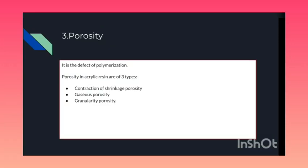Number three is porosity — a defect of polymerization that results in a porous structure of the cured acrylic. It may have undesirable effects on the strength and aesthetic properties of the acrylic. Porosity in acrylic resin is of three types. Number one: contraction or shrinkage porosity, which appears as irregular voids all over the surface of the denture. Number two: gaseous porosity, which appears as fine uniform bubbles in thicker sections of the denture remote from the source of external heat, such as the palatal region of upper denture and lingual flange of lower denture.